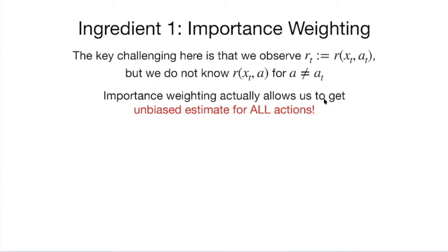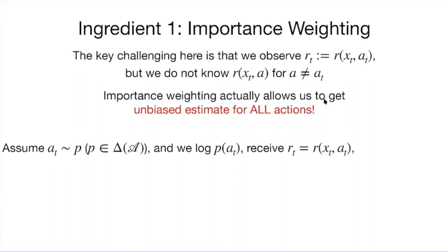Let's see how it works. At every round T, sample an action A_t from a distribution P over the action space — maybe a uniform distribution. Log the probability of this action under the distribution. Propose this action and receive the corresponding reward. Now we get the reward for the action we proposed, but we don't know the reward of actions we haven't proposed.